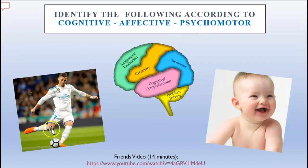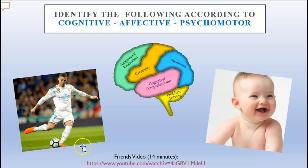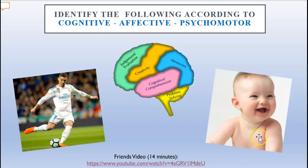Looking at these three pictures, think about whether they fall under cognitive, affective, or psychomotor domains. The person kicking a soccer ball — if you said psychomotor, you'd be correct, because he's physically doing something; he was taught how to physically kick the ball. When you see an image of the brain, think cognitive, because you're processing information. And when you look at a baby and feel happy — with emotions running through your mind — that is the affective domain.